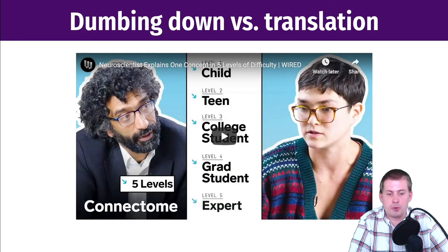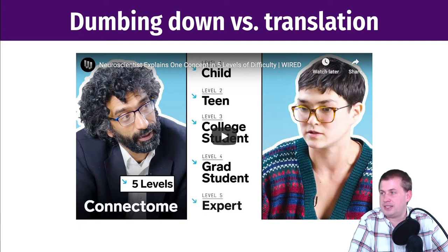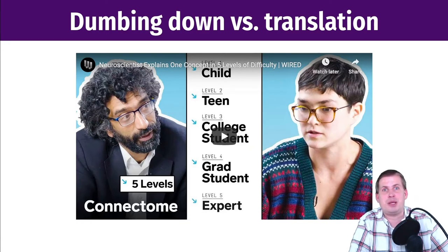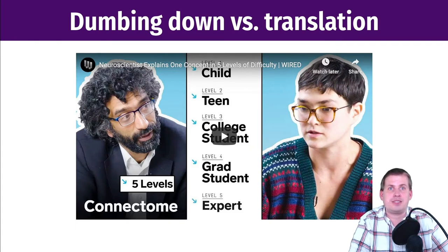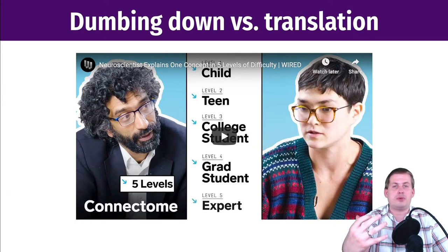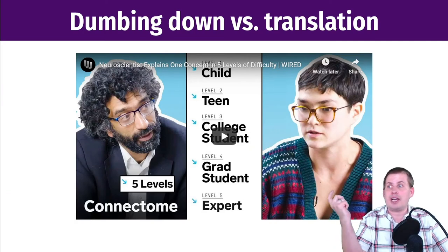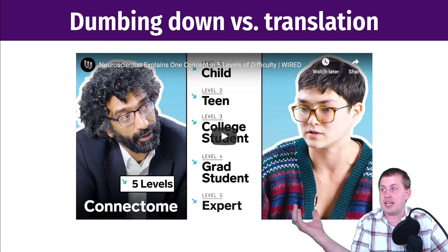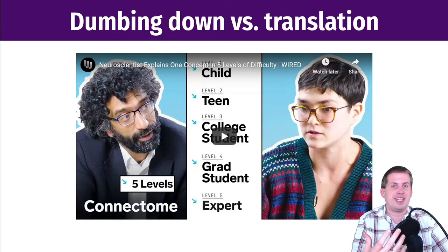A really good example of this is a video — if you press P in the slides you'll see the link for it on YouTube — where they take a neuroscientist and have him explain his research to five different people with different levels of expertise: a child, a teenager, a college student, a grad student, and an expert. What's fascinating is that when he talks to the child, he doesn't use baby language or treat them like they know nothing. He treats the child as smart, gets on their level, and interprets his results in a non-condescending way.